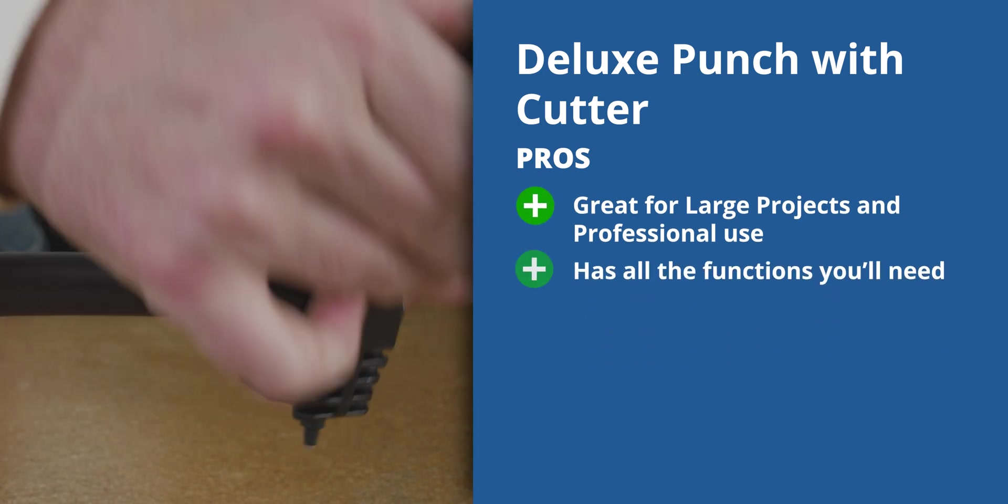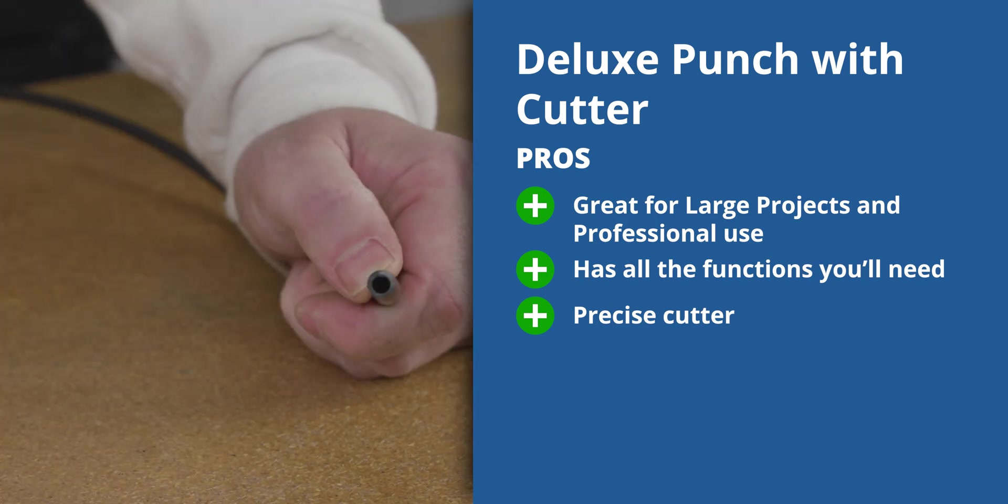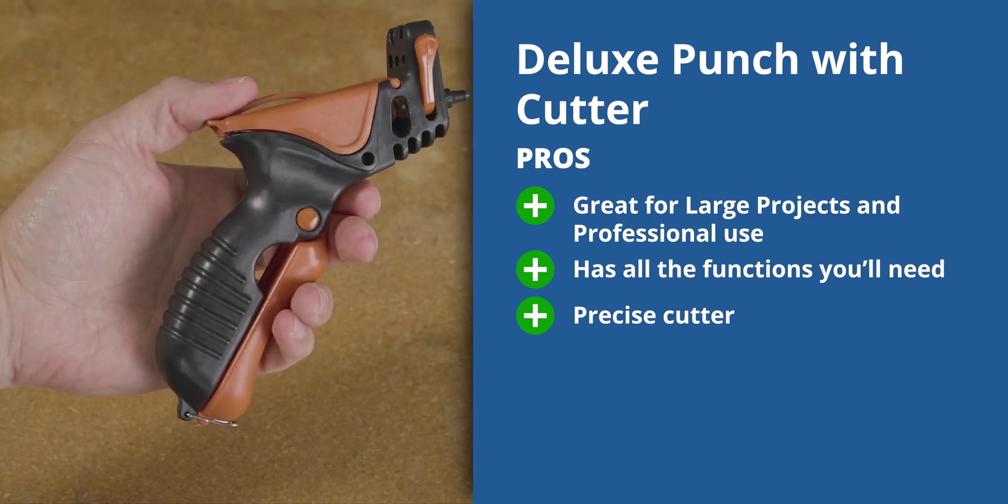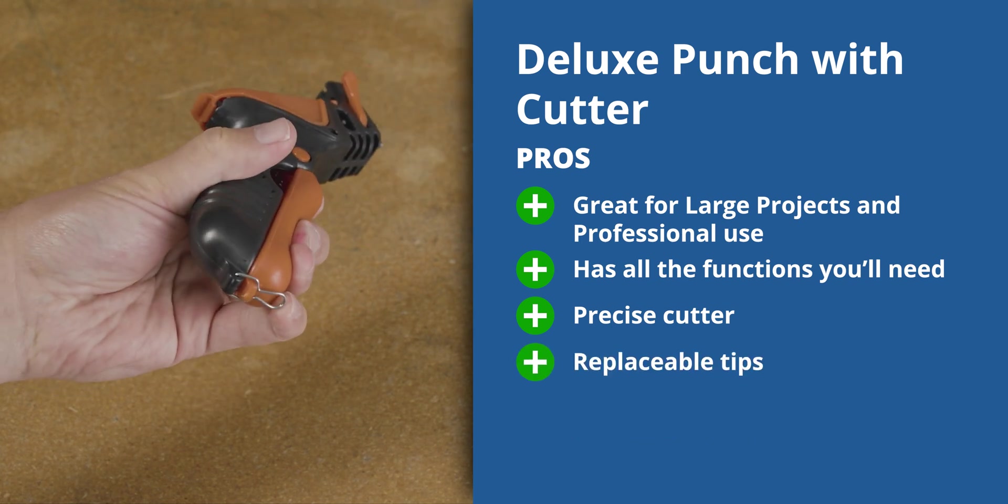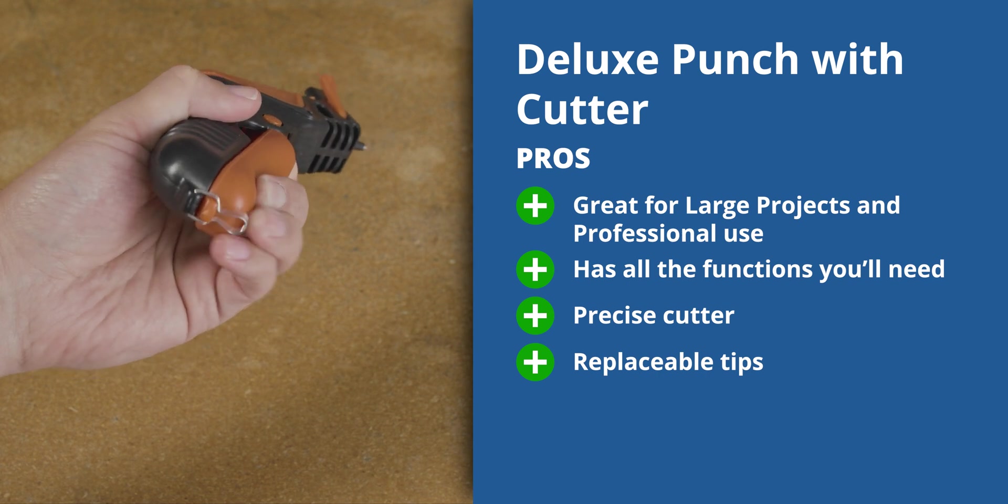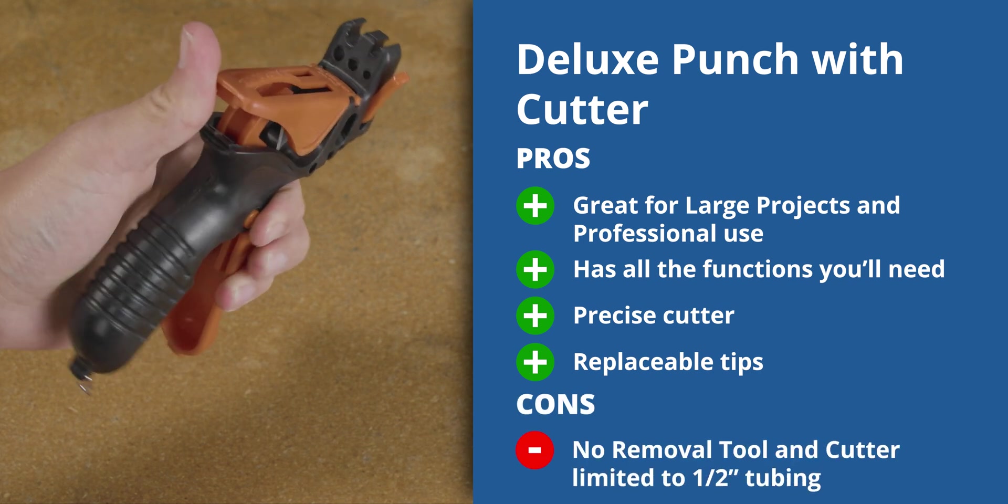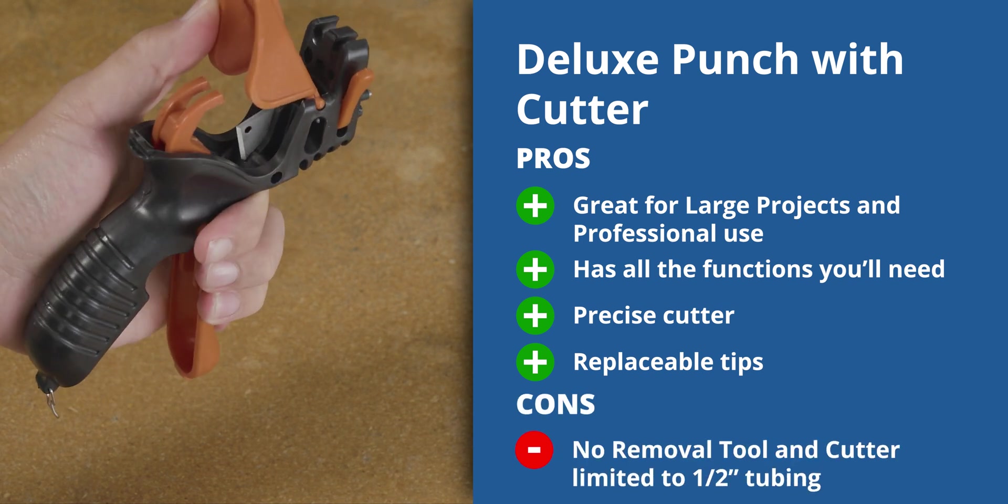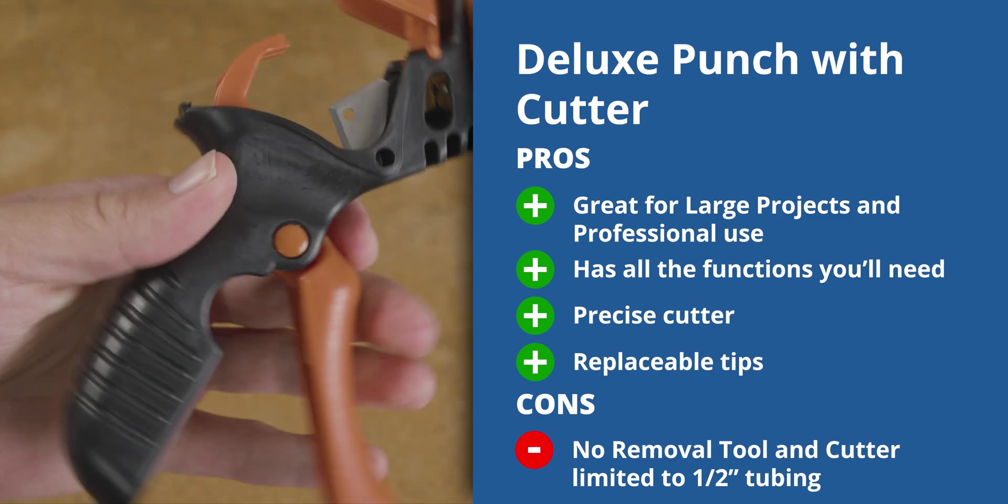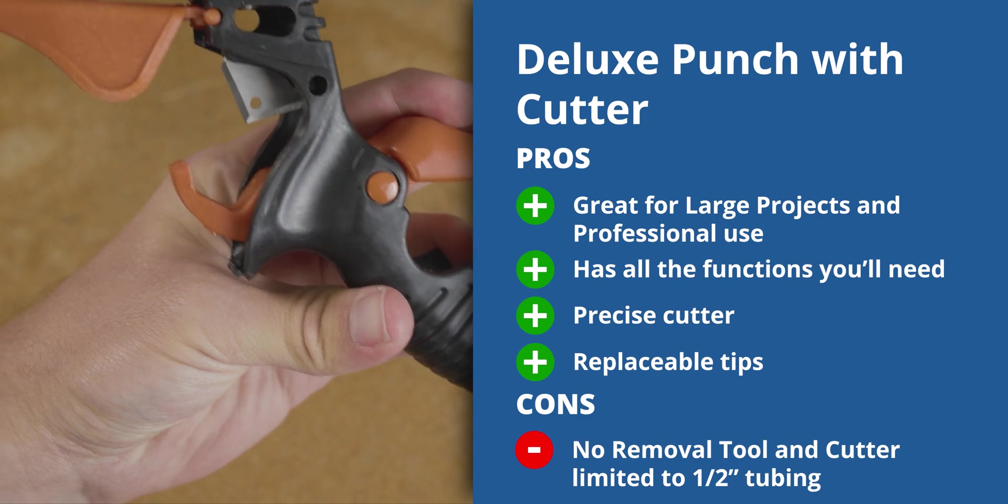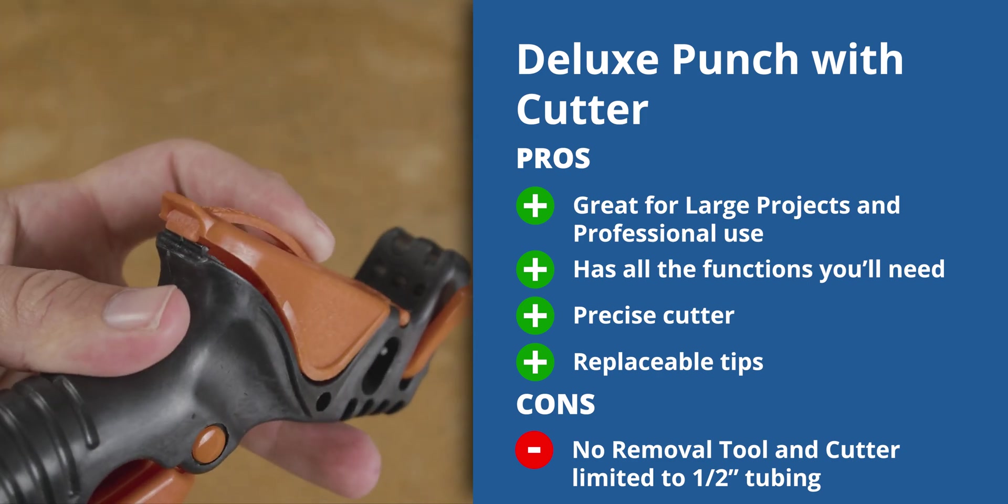This tool really is the gold standard for a landscaper or commercial drip irrigation installer. The major pro to this punch is it can pretty much do it all, and it's incredibly durable. The cutter makes very straight cuts, which is important for drip and makes installing fittings much easier because it doesn't bend the tubing. Perhaps the biggest pro are the replaceable tips. Any other punch, when the tip wears out, you're going to have to replace the entire punch. With this, you can just replace the easily to change tip. The only real downside to this punch is it has a high cost for smaller projects, it doesn't have a removal function, and its cutting function is limited to up to one half inch poly tubing. And the cutter takes a little bit of getting used to as it requires a twist motion to fully slice through the tubing. Over time, as the blade dulls, this will become more pronounced.